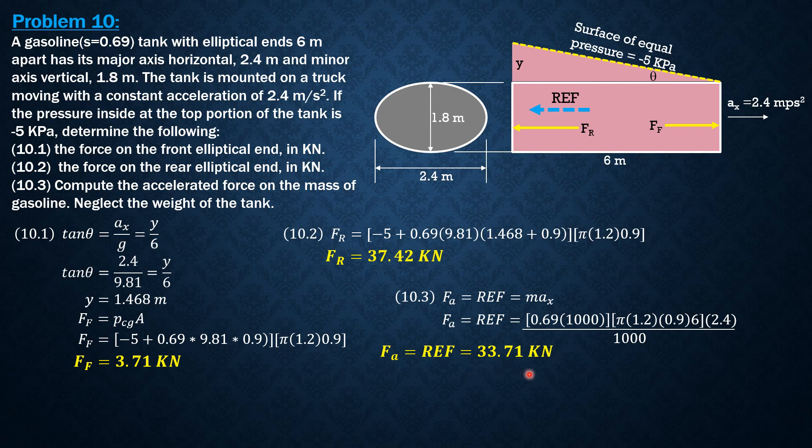So another way is the simpler way to solve this reverse effective force is simply, you just get the difference between the force on the rear end and the force on the front end. That's also the reverse effective force. So reverse effective force is 37.42 minus 3.71, and it is also the accelerated force. You'll get the same answer just to check.